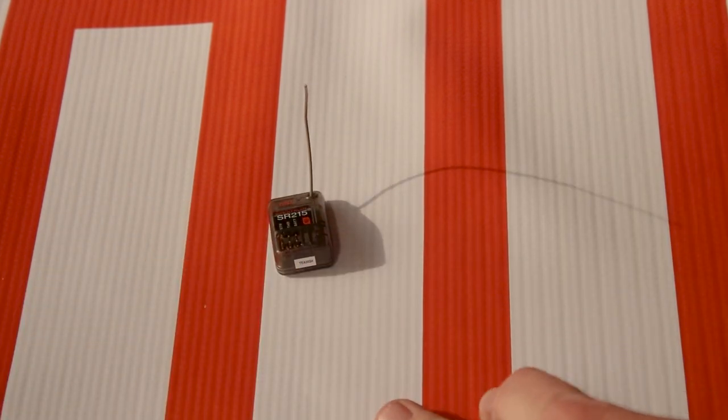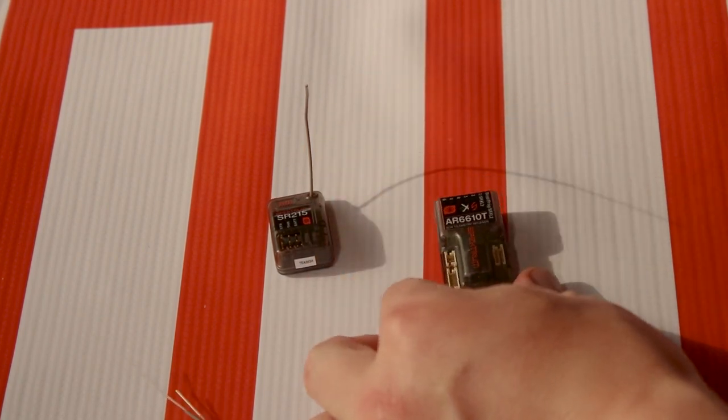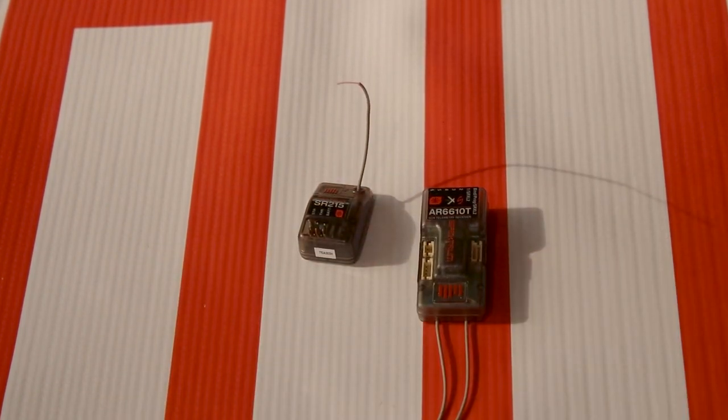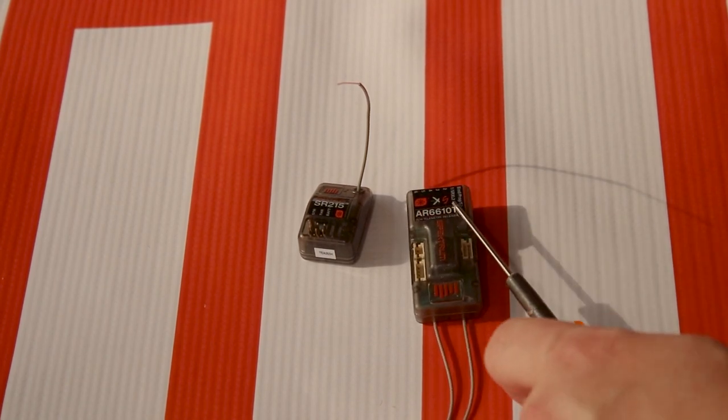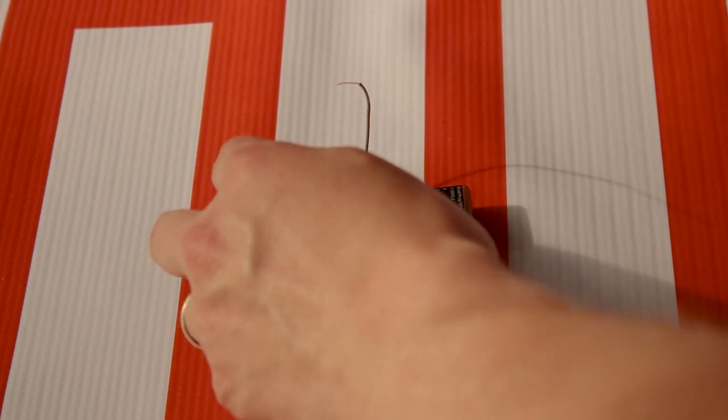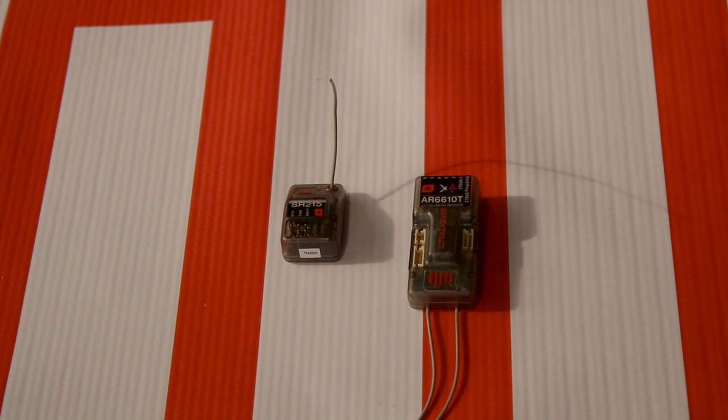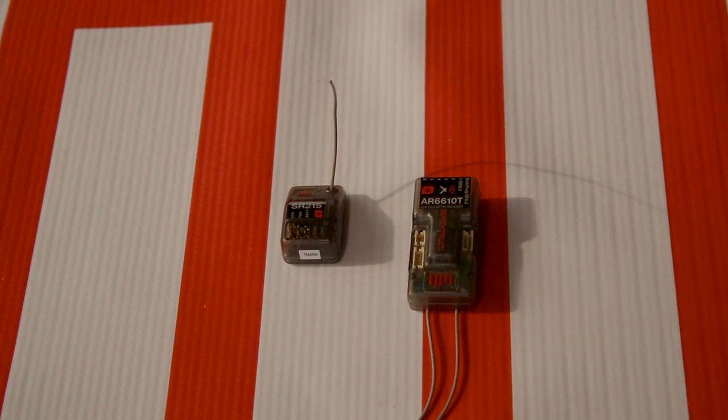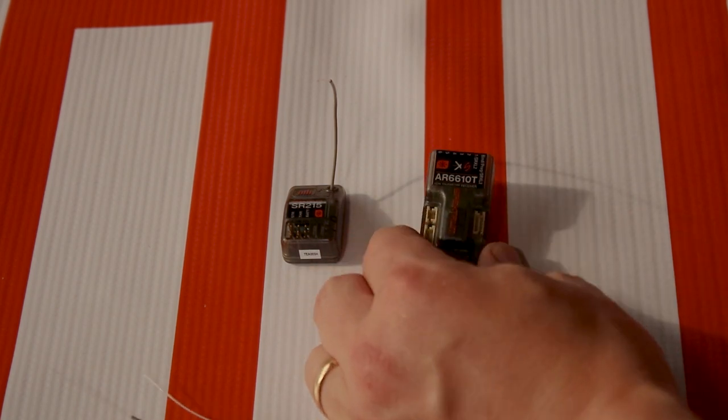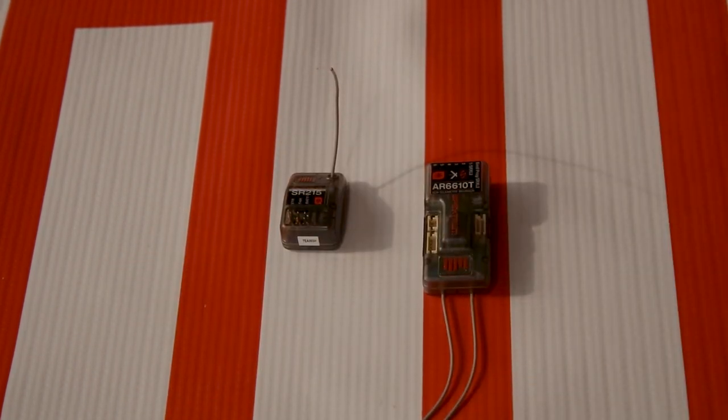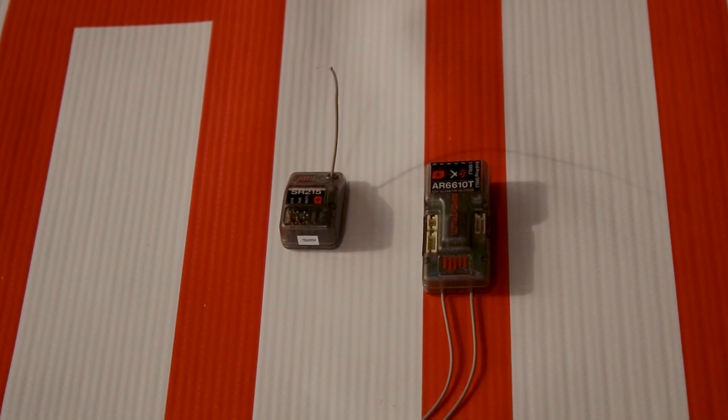Another thing about compatibility is between our SR-215 and let's say an AR-6110T receiver. There are two differences between these and that is that one is an air receiver and a surface receiver. Surface receivers use the DSMR protocol, or the surface protocol. The surface protocol is specifically designed for surface applications and then air is designed for air applications. The air receivers will only bind to air transmitters like a stick radio, and then the surface receivers will only bind to a wheel transmitter or a surface transmitter.